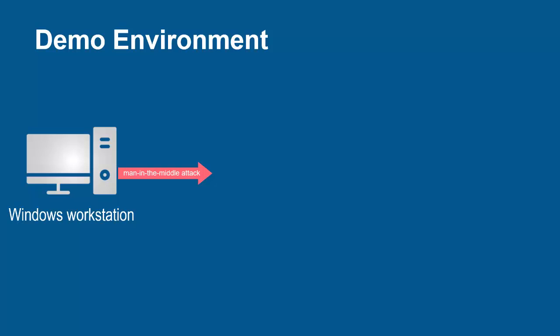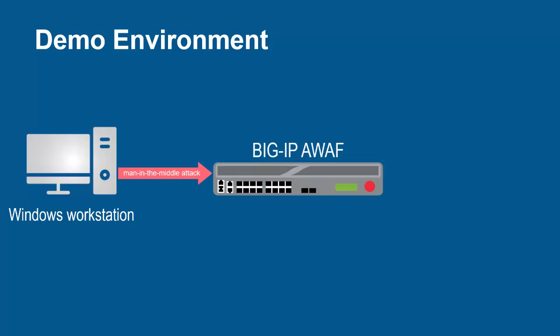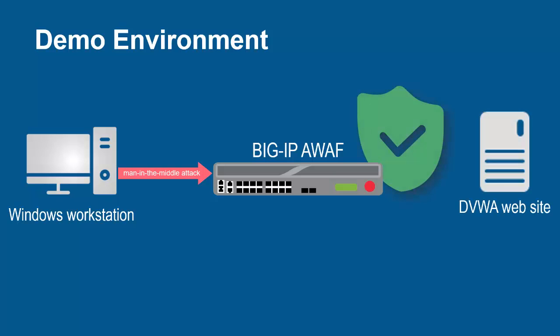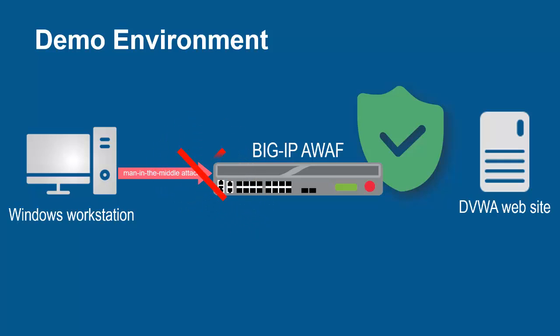The environment for this demo contains three devices. A Windows workstation will be used to submit requests that include parameters that have been modified by a man-in-the-middle attack. These requests will arrive at the F5 Big IP System running Advanced Web. The Big IP System sits in front of, and protects, the back-end web application. Using its full proxy architecture, it examines every request and can block all parameter tampering attempts, preventing them from reaching the back-end web servers.